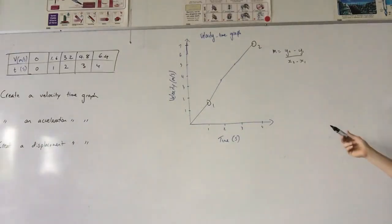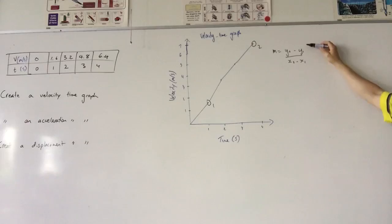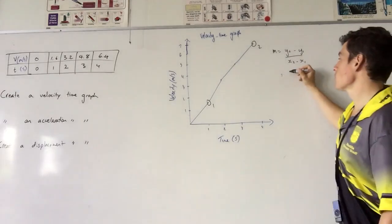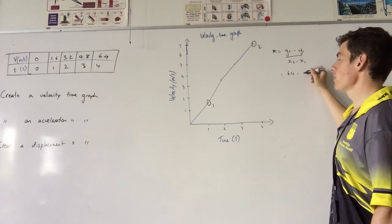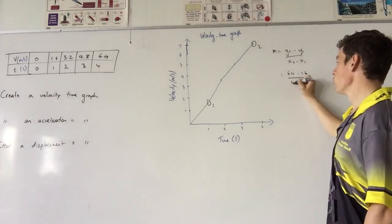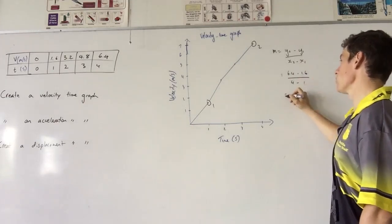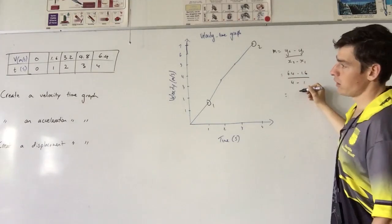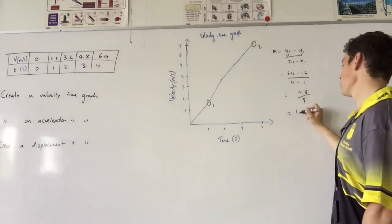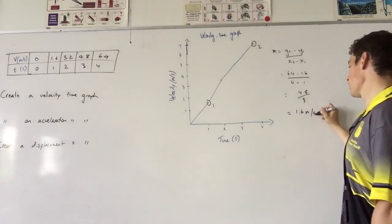If you know that that's a sticky point and I see plenty of kids make that mistake, do you think I see kids make a mistake with this one? No. The only mistake you can possibly make is if you don't assign the correct y2 and x2 values. Y2 is 6.4 minus y1, 1.6 over 4 minus 1, which equals 4.8 over 3, which equals 1.6 meters per second squared.